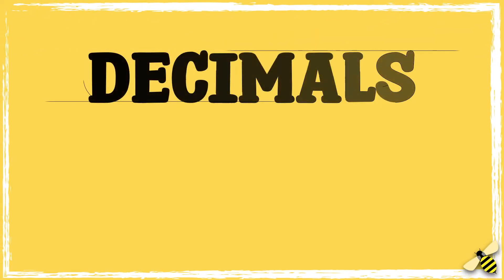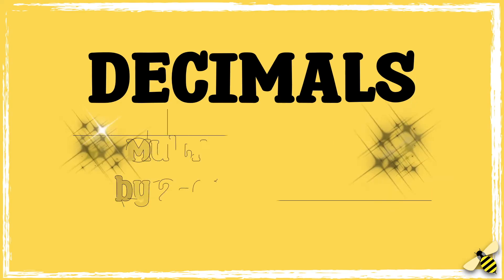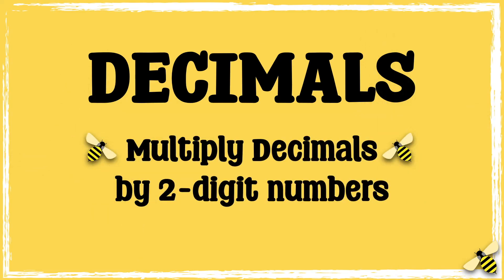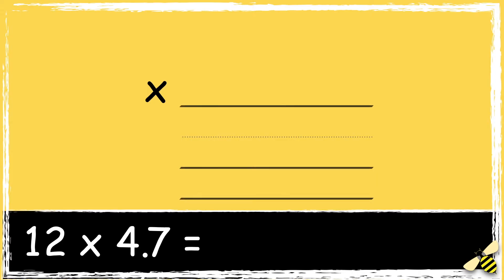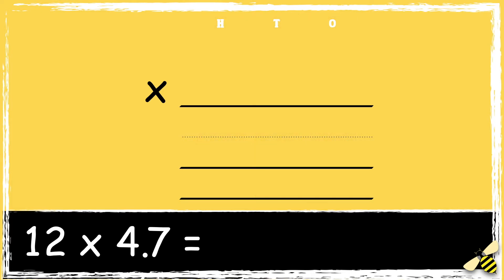In this video we're going to be multiplying decimals by two-digit numbers. Here is a calculation: 12 multiplied by 4.7. To work this out we're going to do some long multiplication. It's really important to line the numbers up correctly. Initially we ignore the decimal point and treat it as if it was a whole number.